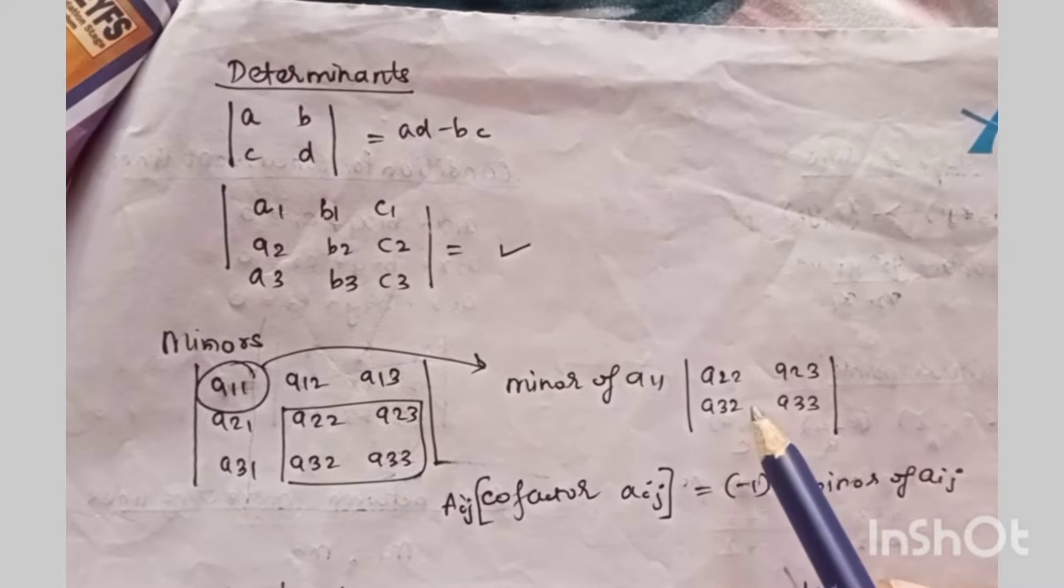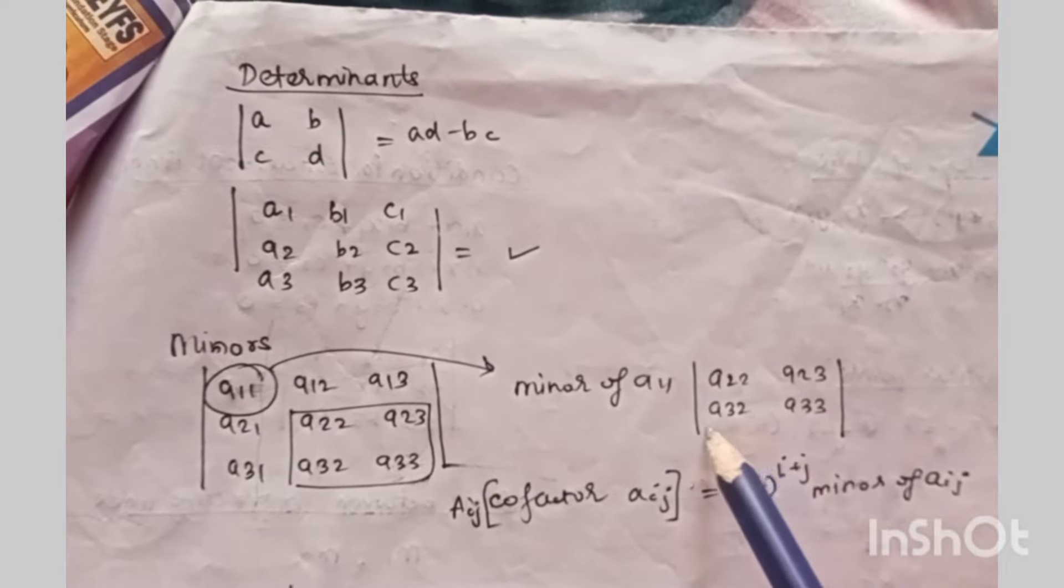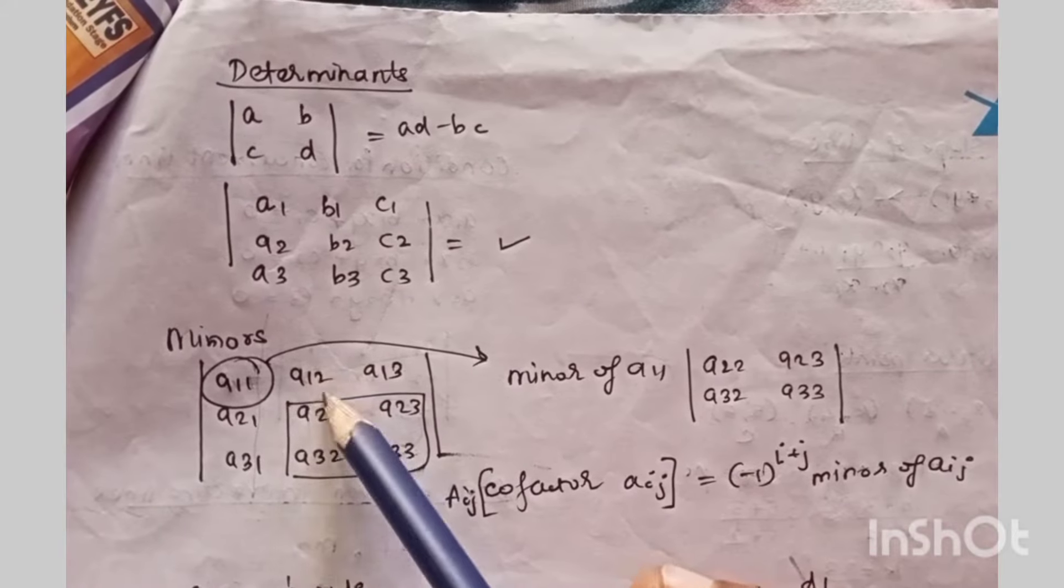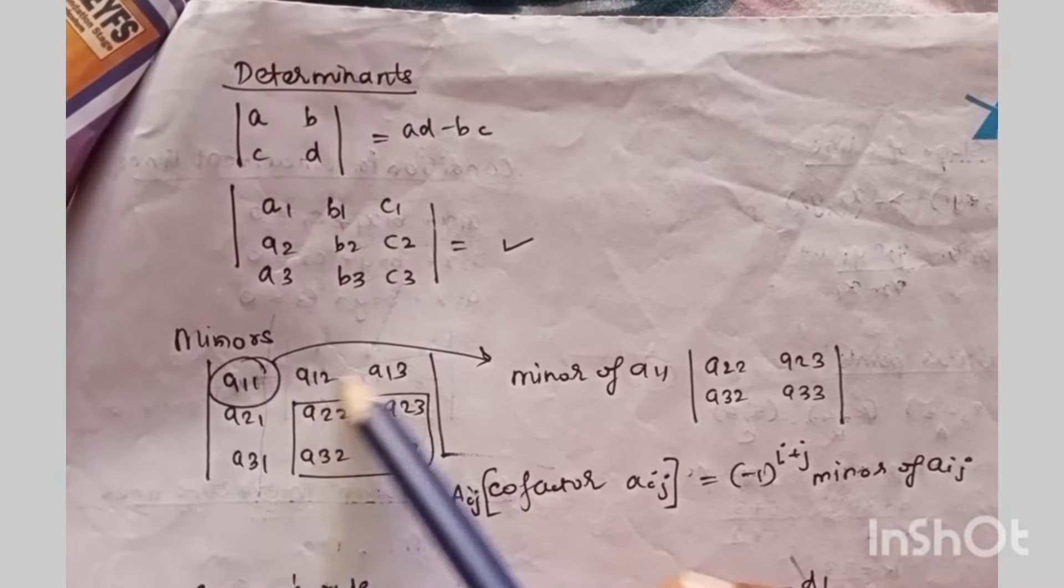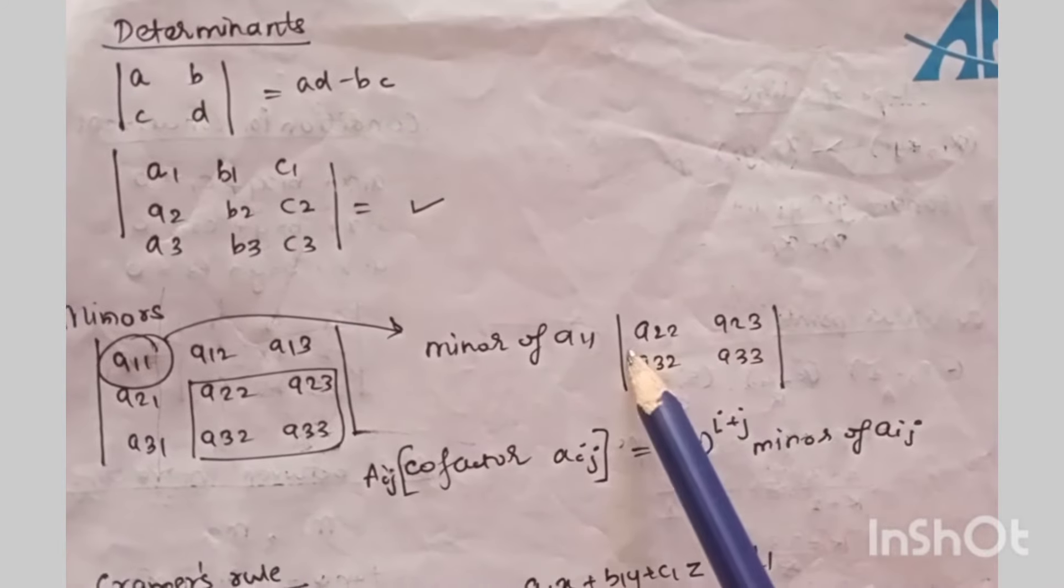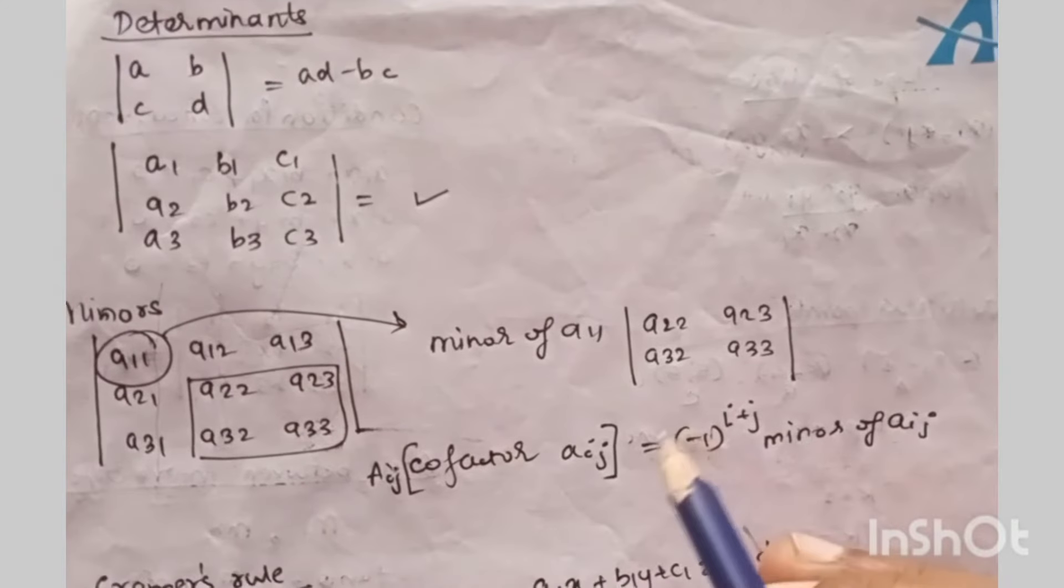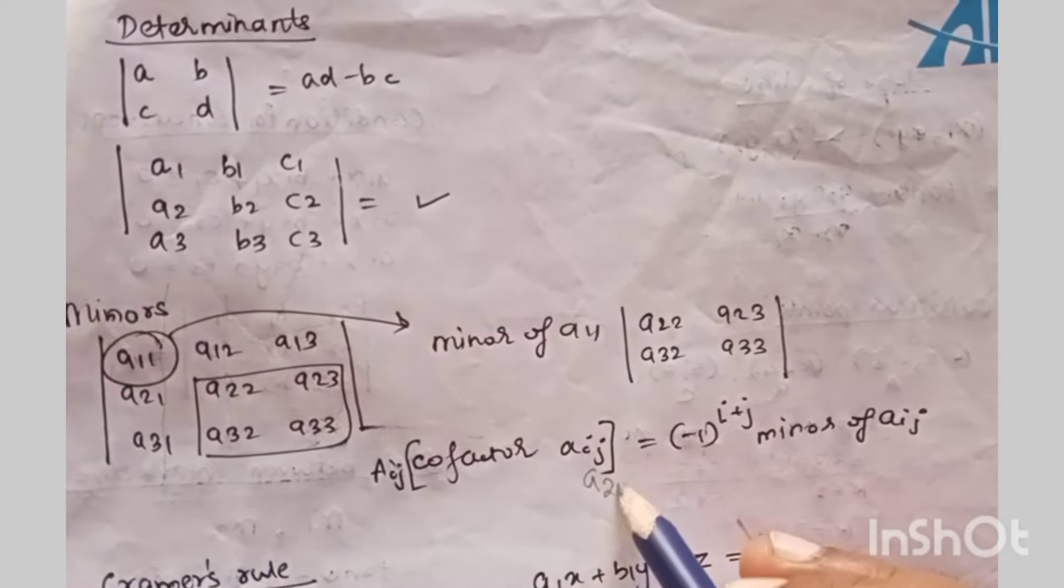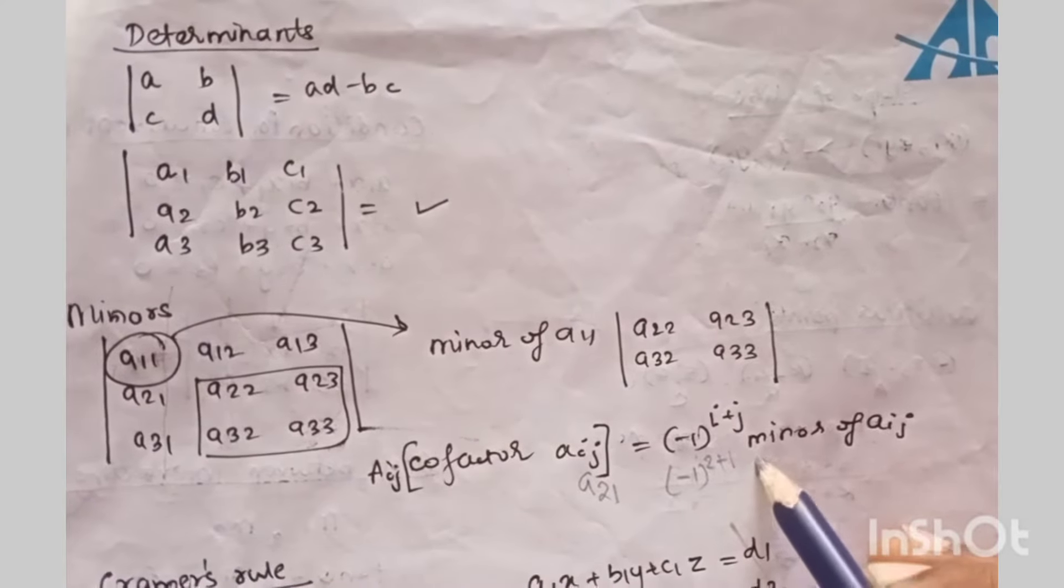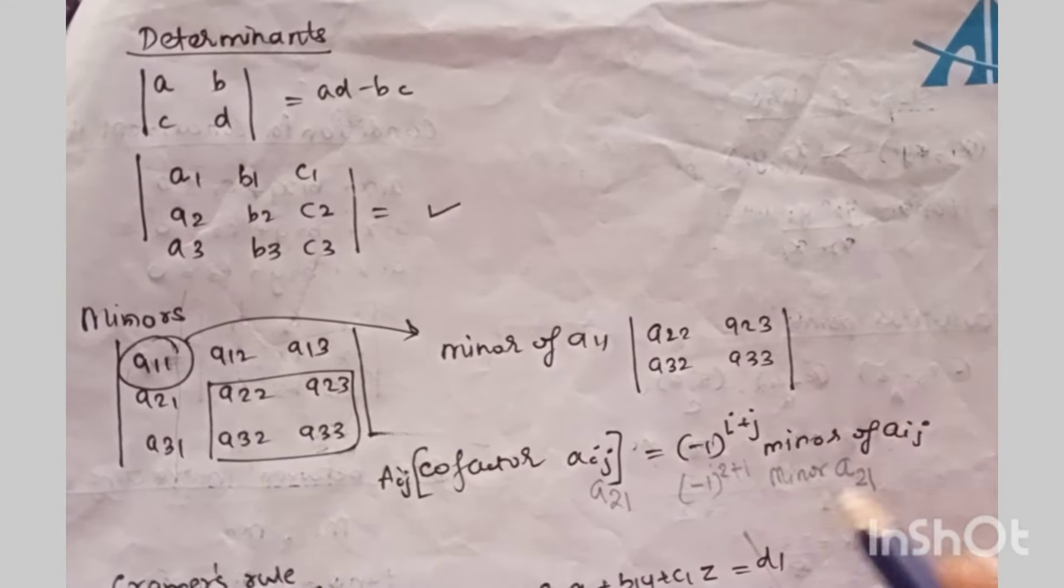So it will be A22, A23, A32 and A33 and then this is a 2x2 determinant you have to find the value by multiplying and subtracting. Similarly if you want to find minor of A12 you will remove first row second column. Once you find the minor then cofactor is minus 1 raised to i plus j times minor of Aij. So if it is A21 then minus 1 raised to 2 plus 1 times minor of A21. So this is how you find minor and cofactor.